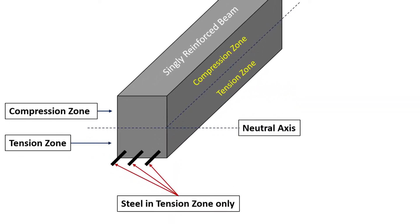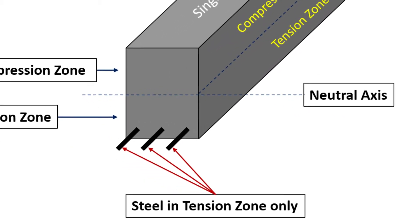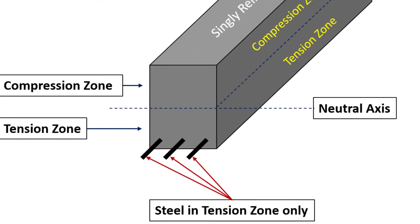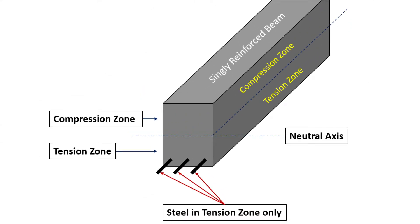A singly reinforced beam is a type of beam that has steel reinforcement in the tension zone only. This type of beam is typically used in situations where the load on the beam is relatively small and the concrete is strong enough to handle the compression forces without reinforcement.